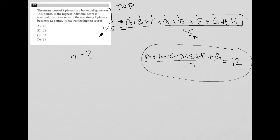So what does this tell me? Well, this tells me that I can simplify this. I can multiply both sides here by seven. And what I'm left with is that a plus b plus c plus d plus e plus f plus g is equal to 12 times 7, which is 84.